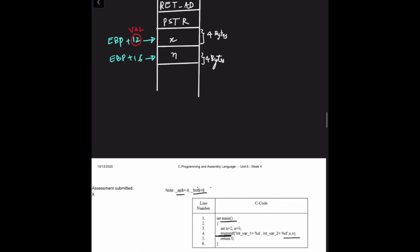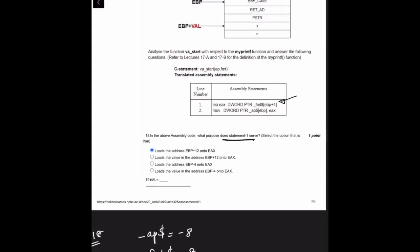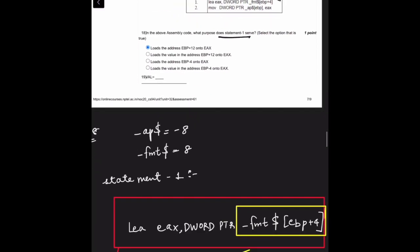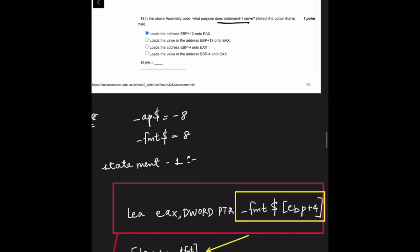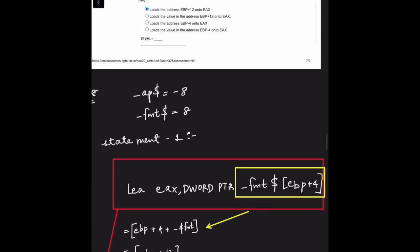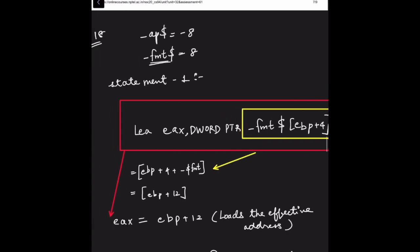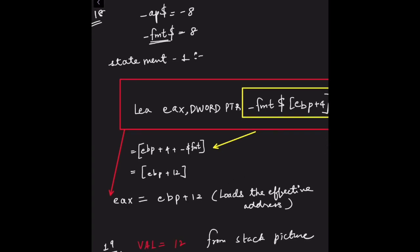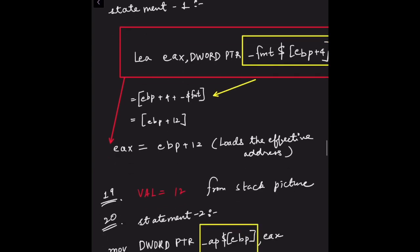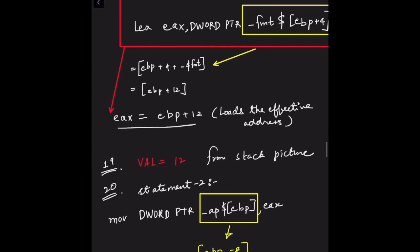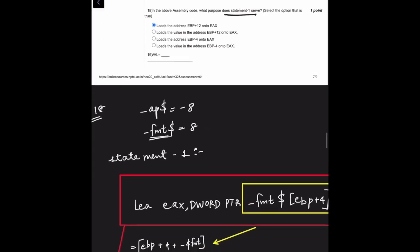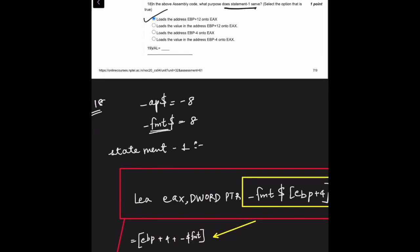Question 18: in the assembly code, what purpose does statement 1 serve? Statement 1 is LEA EAX, [EBP+4 + underscore_$], where underscore_$ equals 8. So the effective address is EBP+4+8 = EBP+12. Since LEA loads the effective address (not the value at that address), EBP+12 is placed into EAX. This matches option 1, which is correct.